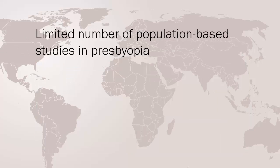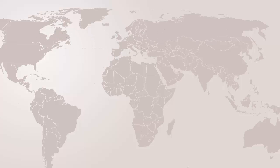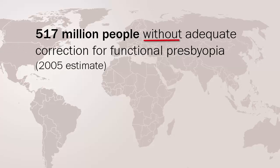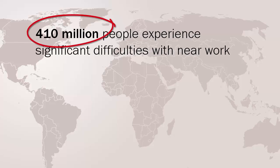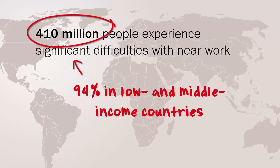There have been a limited number of population-based studies in presbyopia. It was estimated that globally there were 517 million people without adequate correction for functional presbyopia in 2005. Some of these people would have had minimal correction requirements, and the estimate of those likely to experience significant difficulties with near work was about 410 million. Of these people, 94% lived in low- and middle-income countries.